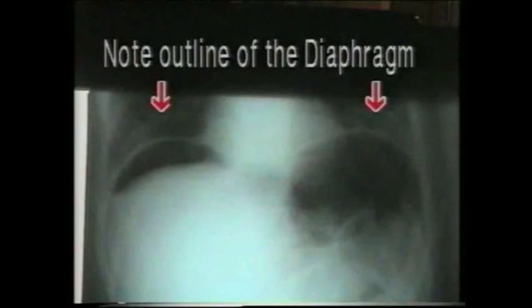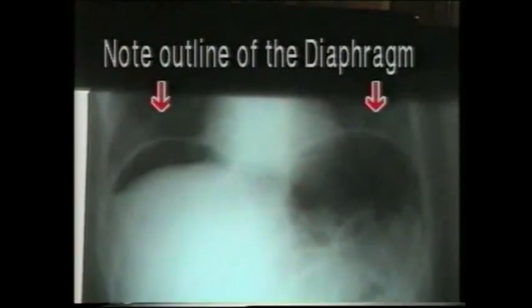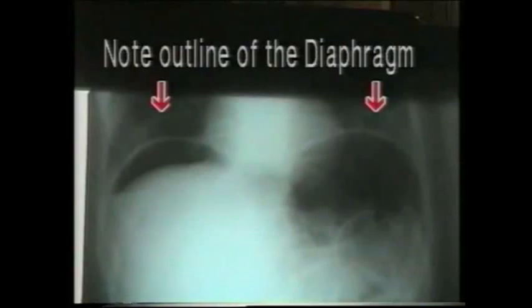This is a standing x-ray of the abdomen showing gas under both the domes of the diaphragm. Note the thin, smooth dome-shaped outline of both the diaphragms. On the left side, this outlining of the diaphragm tells us that this is not the stomach bubble, but it is free gas under the diaphragm.